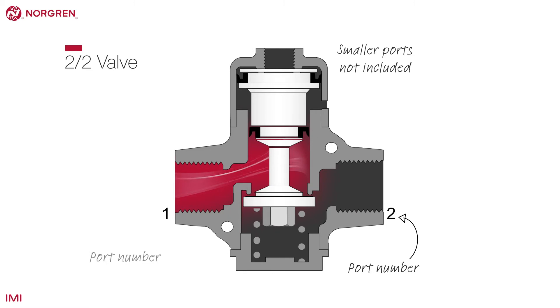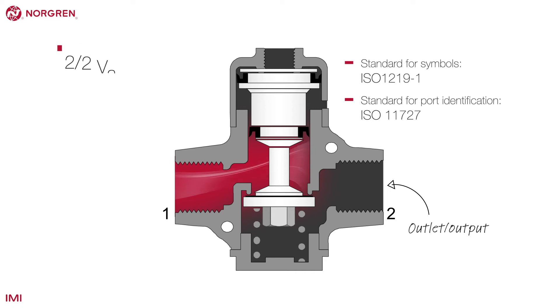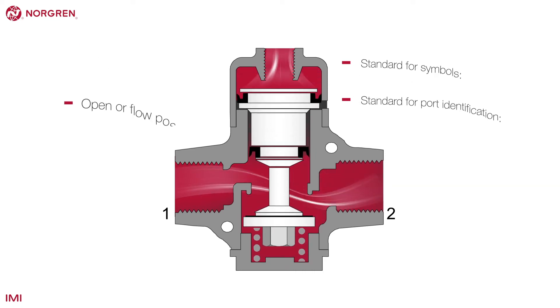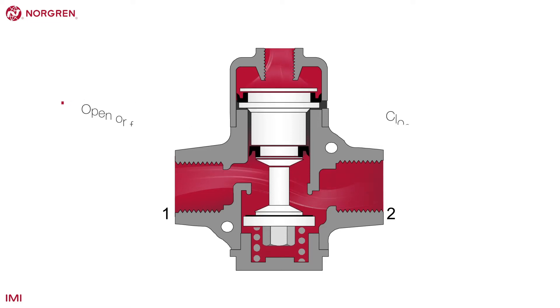This is a 2-2 valve. It has two ports and two positions. Port 1 is the inlet or supply. Port 2 is the outlet or output. This is a standardized numbering system. The two positions are open or flow, and closed or no flow.